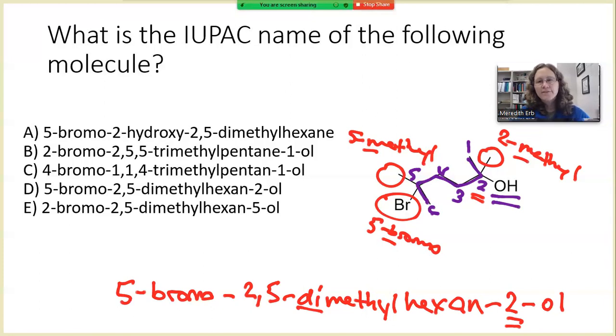So as you can see, I thought this all through before I even looked at any of the answer choices. So now hopefully we look at the answer choices and we find what we came up with. And if we do, we can look. Here's 5-bromo, here's 2,5-dimethyl, hexane-2-ol. So answer choice D corresponds to the name that we came up with for this molecule.